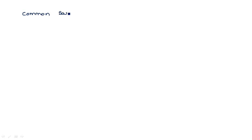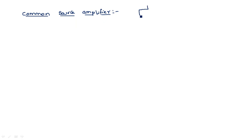So first, what is the meaning of common source amplifier? The source terminal is common between input and output. For a MOS transistor, with gate, drain, and source terminals, the source is common because the input is taken between gate and source, and the output is taken from drain and source.